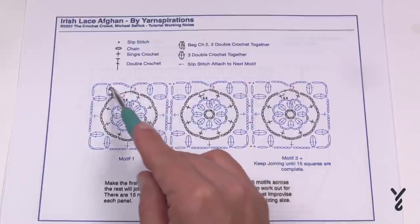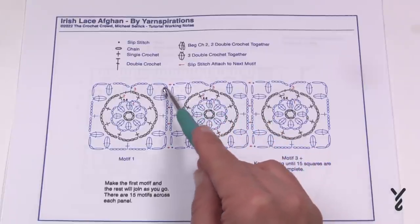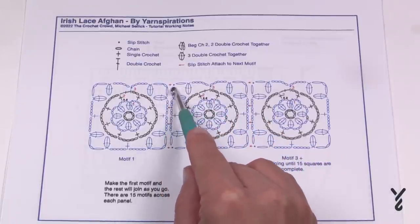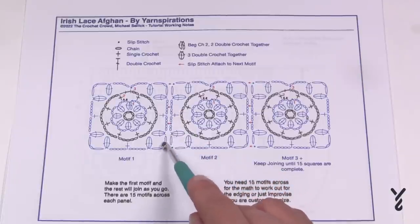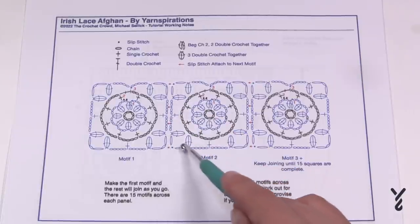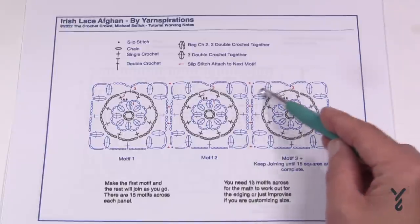So the corners here when you saw it was going to be a chain three corner but if there's a join it's gonna be chain one, slip stitch to the next one, chain one and then come back. So what you're doing is you're strategically attaching these together as you go. Once this side is attached you just continue to do the motif as normal and then you build the next one out like that.